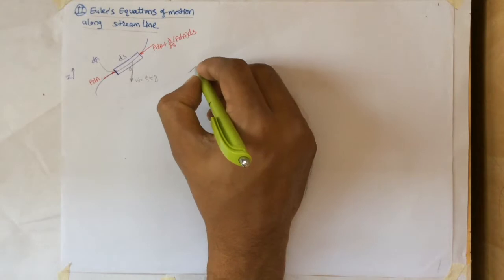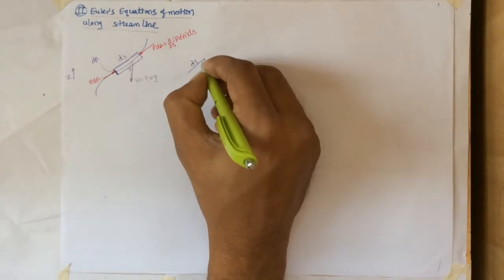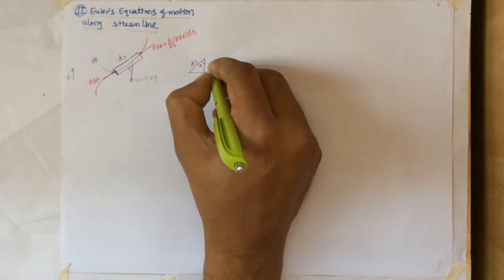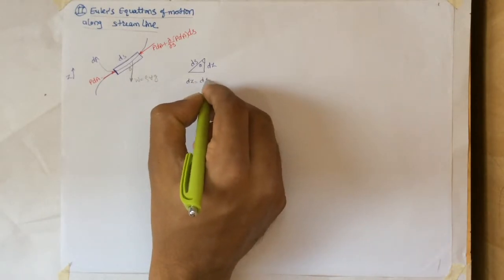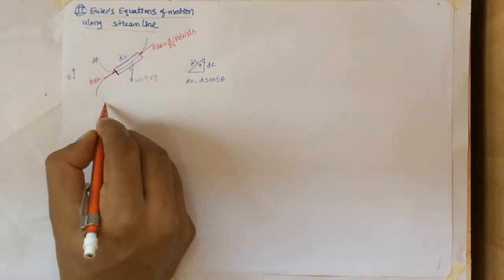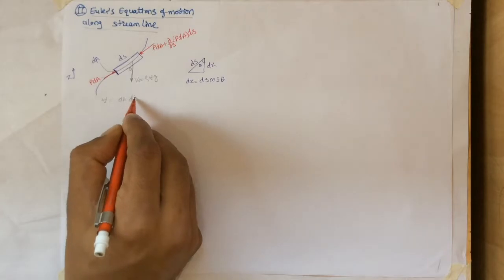We can have a small triangle describing the element. This is ds, this is dz and this is theta. So we can write dz equals to ds cos theta. We can also write volume of the element as dA times ds.